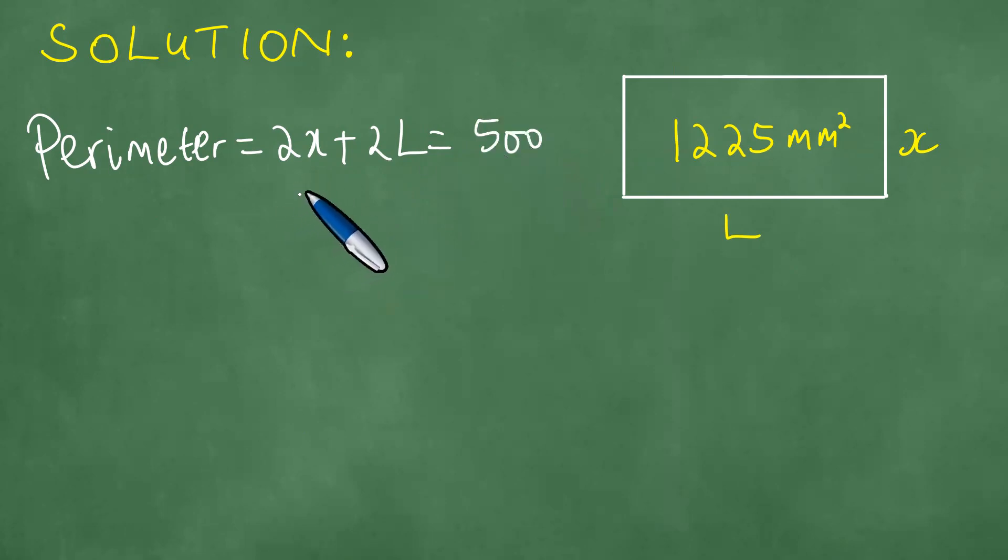Dividing both sides by 2 gives us x plus l is 250. And this means l is 250 minus x.